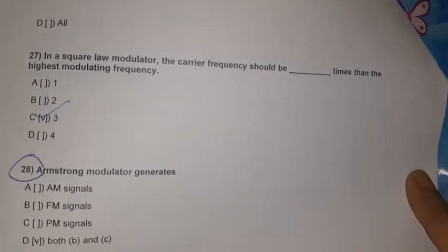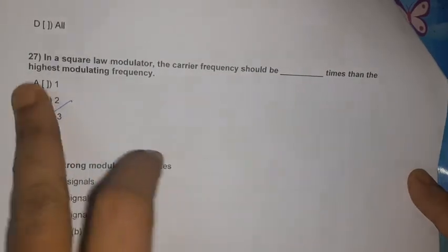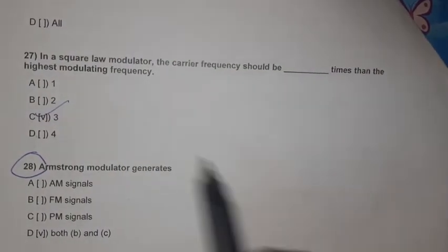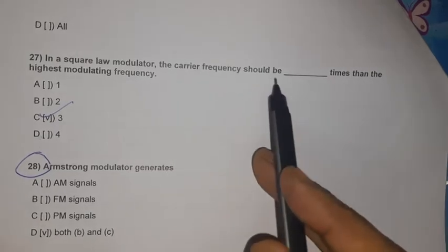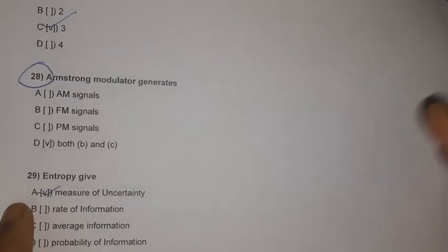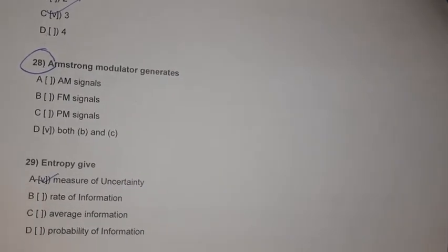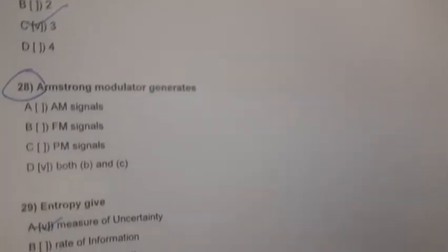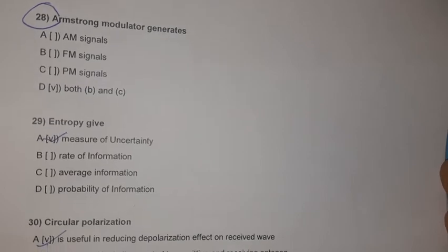Question 27: In a square law modulator, the carrier frequency should be at least three times the highest modulating frequency. Question 28: Armstrong modulator generates both FM and PM signals.